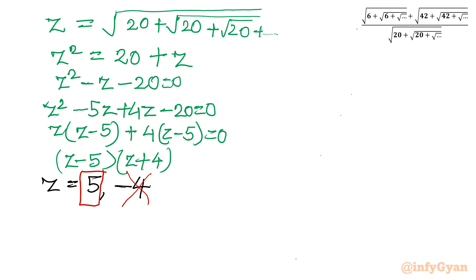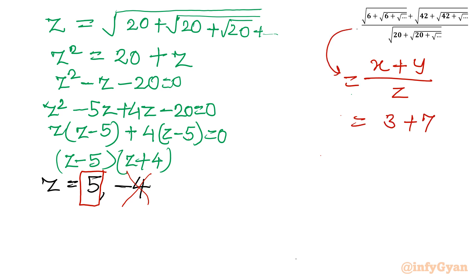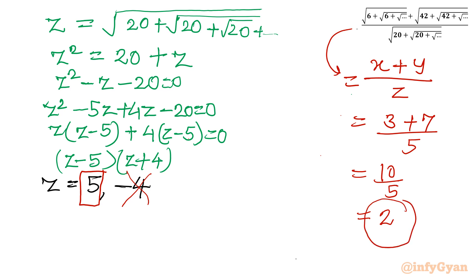So we have calculated x equals 3, y equals 7, and the denominator z equals 5. Writing the expression x plus y over z gives us 3 plus 7 over 5, which equals 10 over 5. So our answer is 2. This completes the simplification by method number 1.